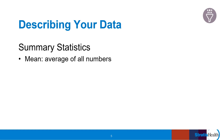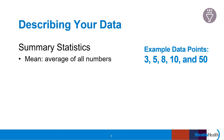The mean is the average of all numbers — this is the sum total of all collected data points divided by the number of data points. Let's take five example numbers: 3, 5, 8, 10, and 50. The total is 76. Divide that by the number of data points, 5, and you get the mean: 15.2.